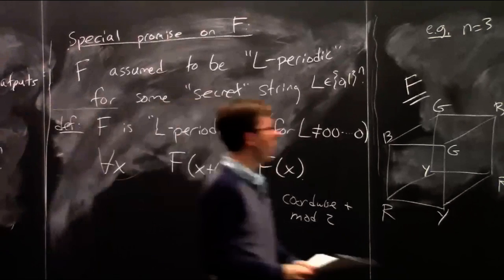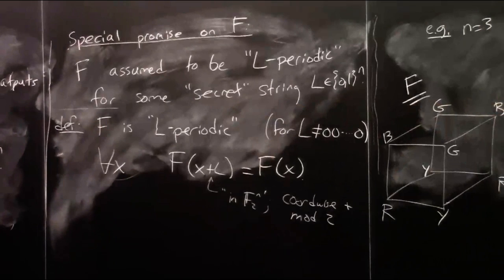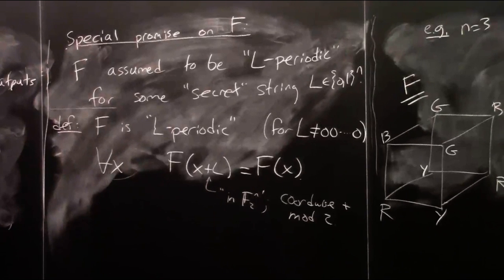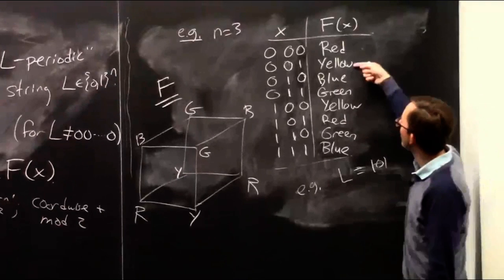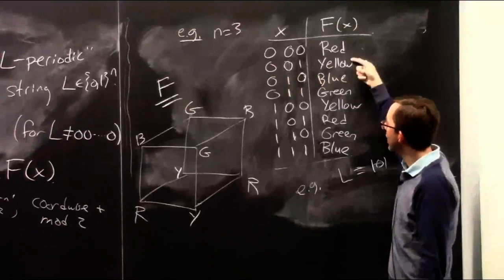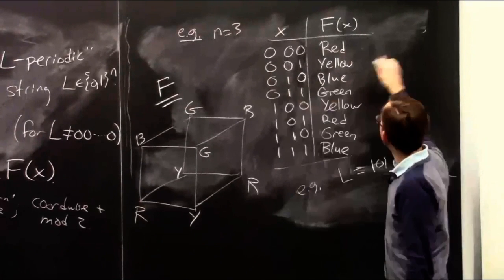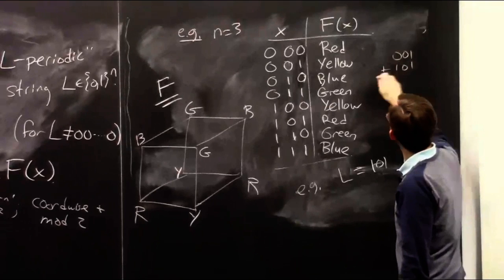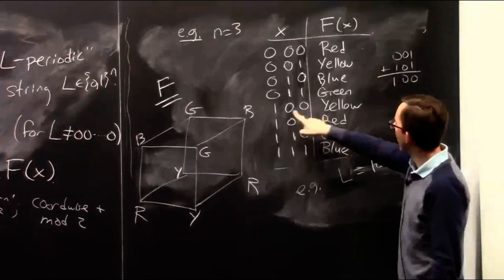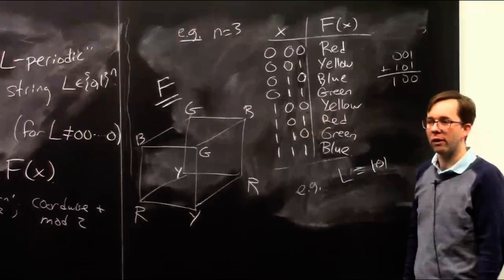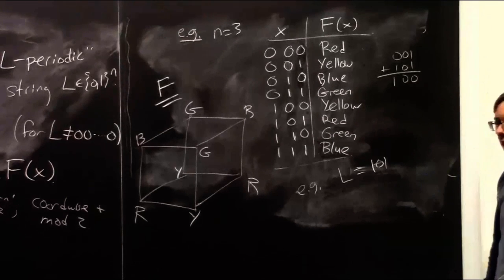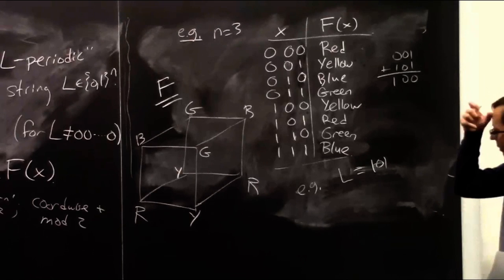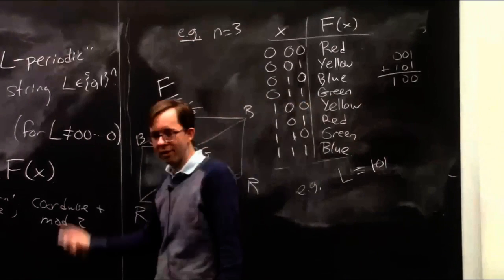For example, whenever you take an input string and coordinate-wise add 1,0,1, then f should have the same value. With 0,0,1 being yellow: adding 1,0,1 coordinate-wise mod 2 gives 1,0,0, and that's also yellow. So this is all mod 2 — each entry is an integer mod 2, which you can call coordinate-wise XOR.